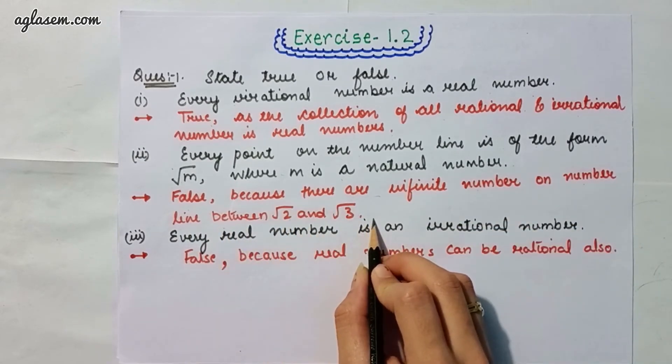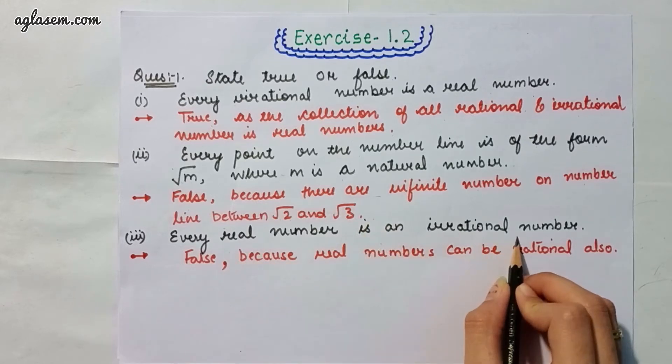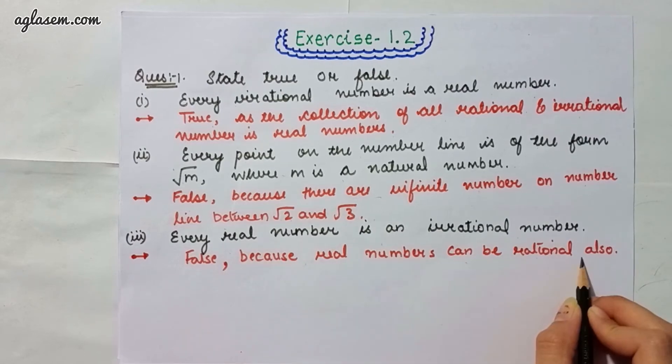Moving to the third part, which says every real number is an irrational number. The answer is false because real numbers can be rational also.